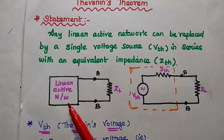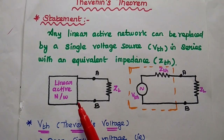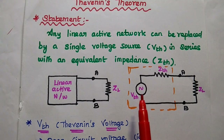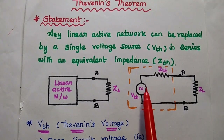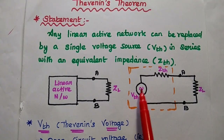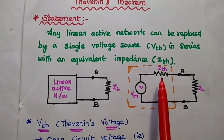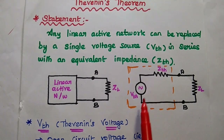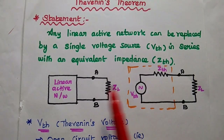Any linear active network can be replaced with an equivalent circuit which consists of a single voltage source in series with the equivalent impedance. This is called Thevenin's equivalent circuit.